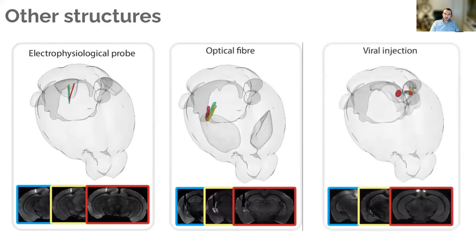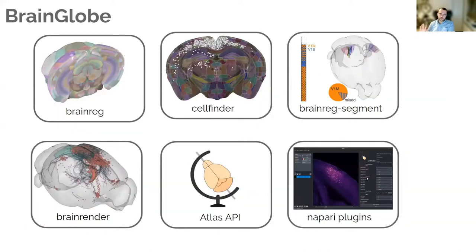This tool, if you're interested, will also be used for other things. We've used it for electrophysiological probes, and you can export your probe tracks out into this format to visualize in BrainRender. You can use it for other things like optical fibers and viral injections. It's all part of this BrainGlobe ecosystem of tools—there's cell detection algorithms and lots of other stuff that all works together.